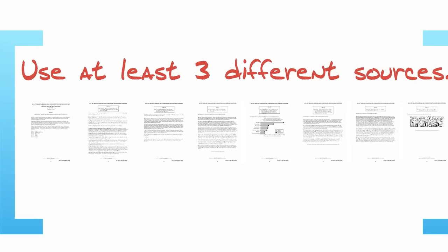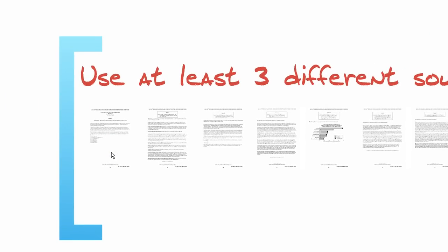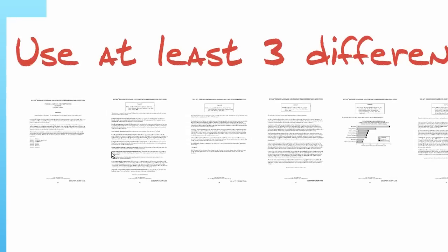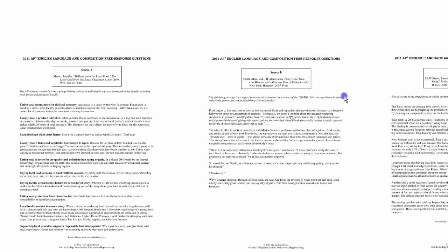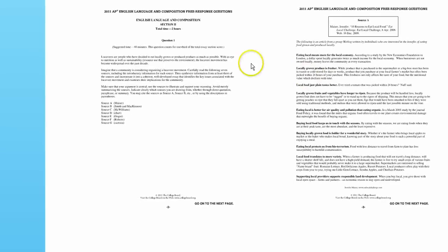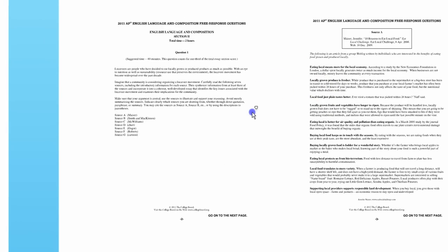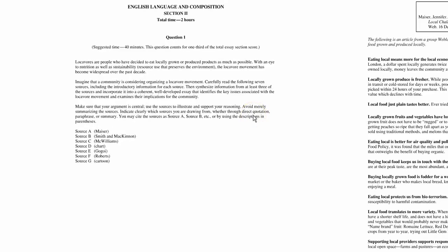The next key for the AP Synthesis Essay that you need to remember is that you must use at least three different sources. So when you look at the prompt for the AP Synthesis Essay, it will have a starting page like this. And that starting page will have the prompt along with some background information, but one of the keys is to use at least three and no more than four of the provided sources to back up your argument.